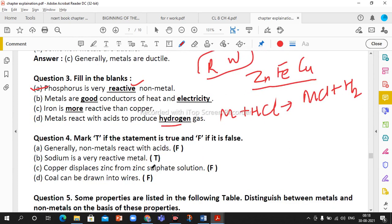Next question, true or false: Generally non-metals react with acid - this is false. Sodium is very reactive metal - yes, it is true. Copper displaces zinc - no, copper cannot displace zinc because copper is less reactive, so it is false. Coal can be drawn into wire - coal is a non-metal, we cannot make wire from it, so this is false.